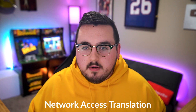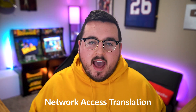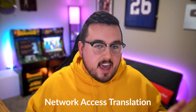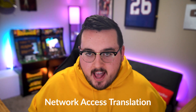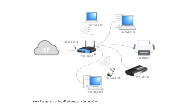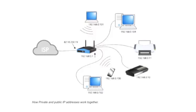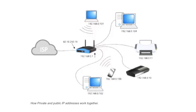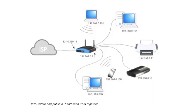Individual devices communicate with the internet with the help of something called Network Address Translation, aka NAT. What NAT does is help the network translate from the public address to all the different private addresses inside a network. That's how each device is receiving the correct information for the process it's doing.